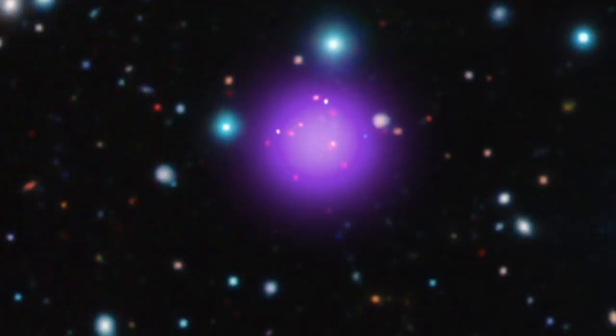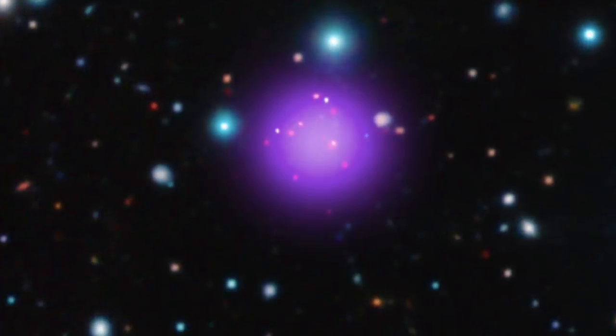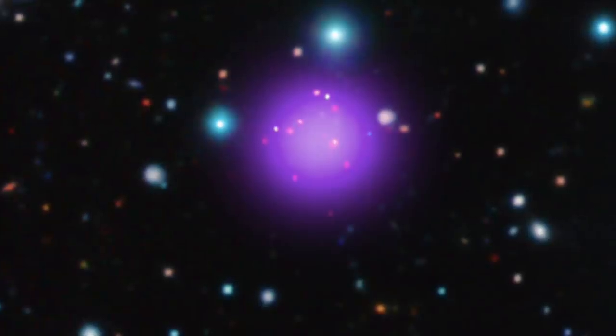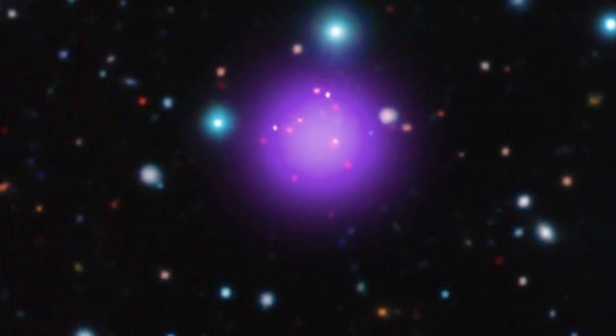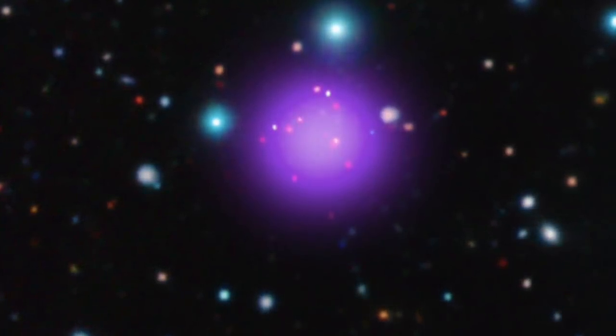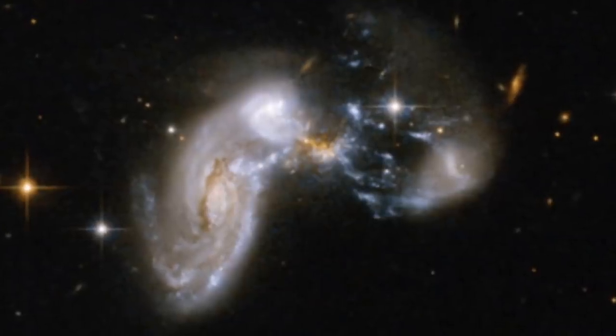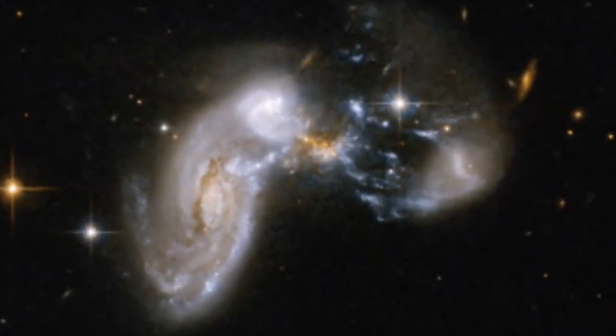Space experts claim that most ultra-diffuse worlds are embedded within swarmed and clusters of roiling galaxies. However, DGSAT-1 is in solitude. Untroubled by galactic impacts or other infinite change, it has most likely not changed since it was conceived.